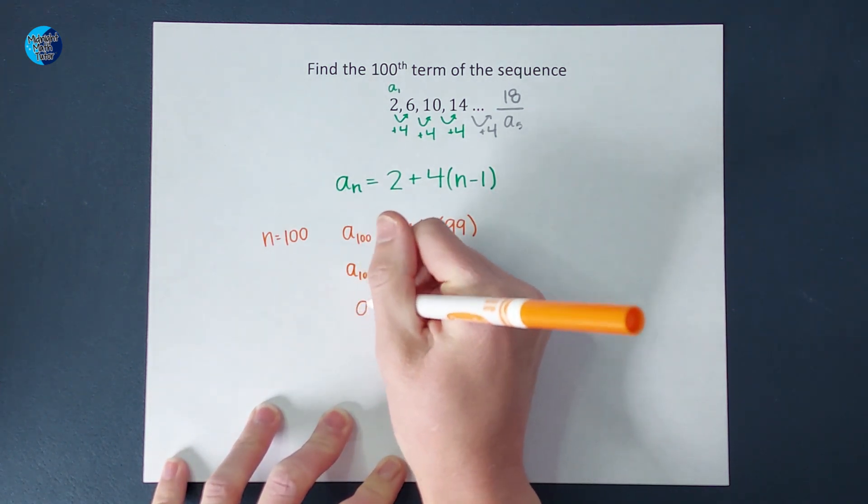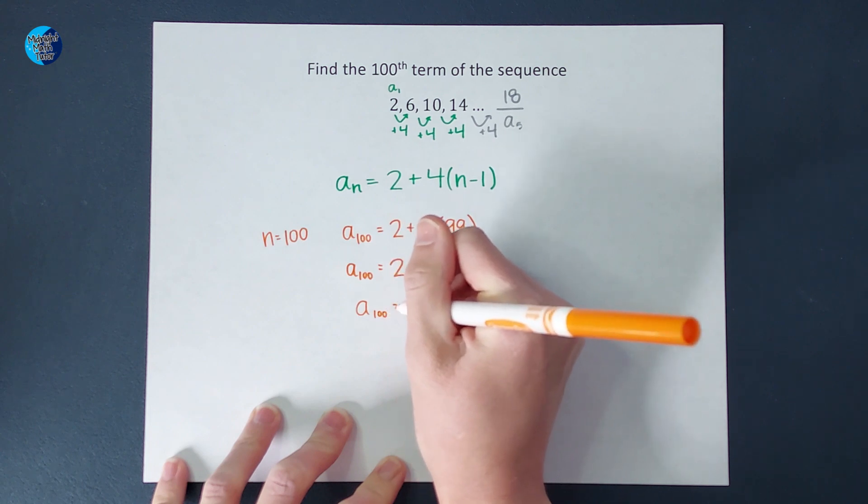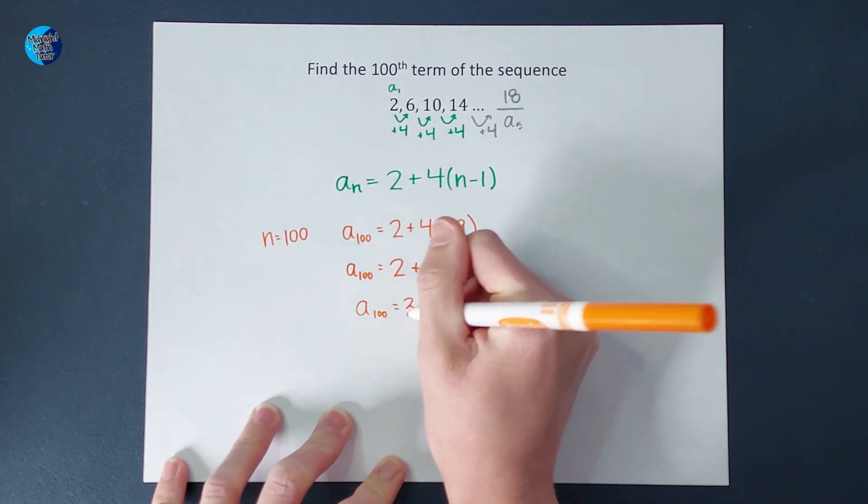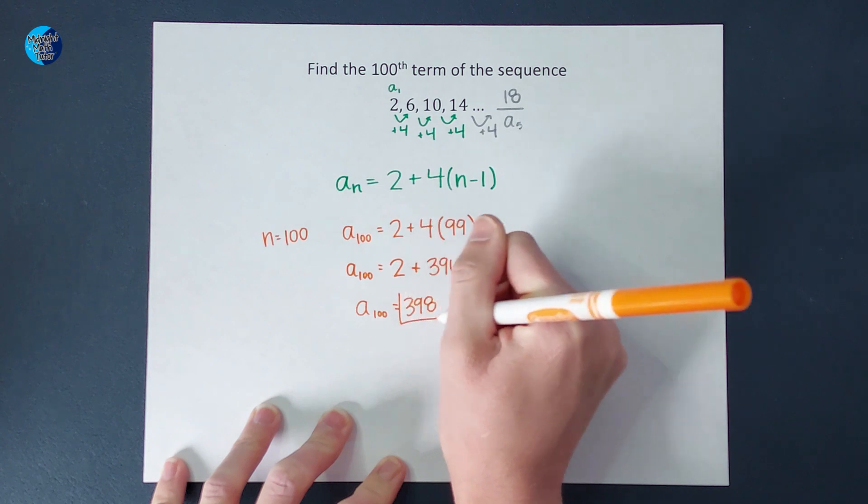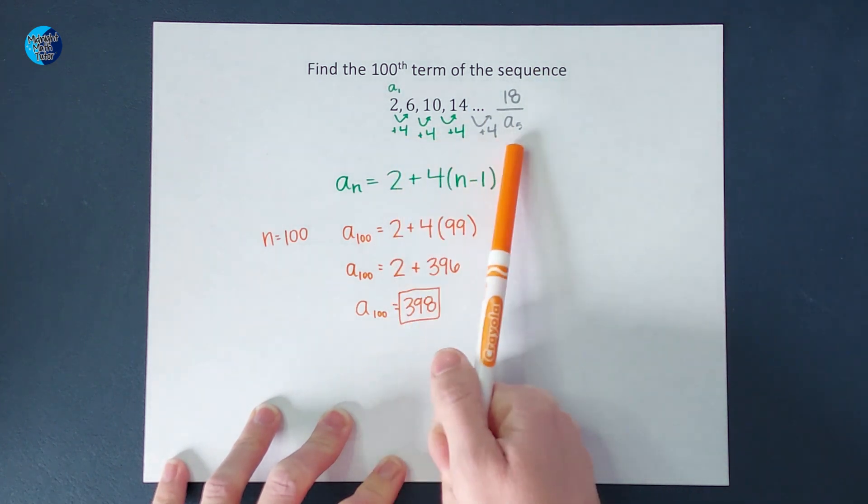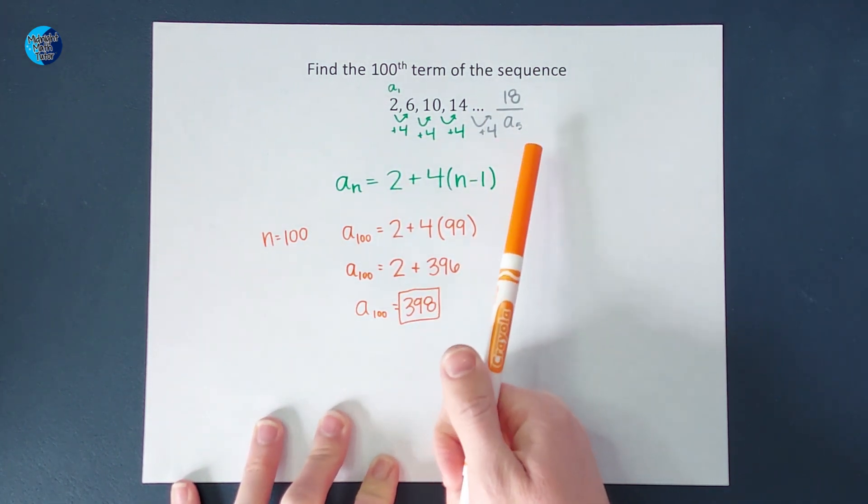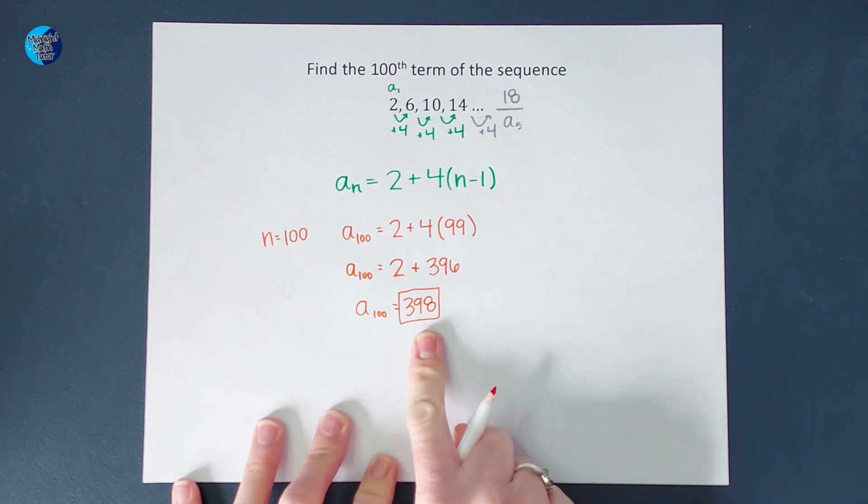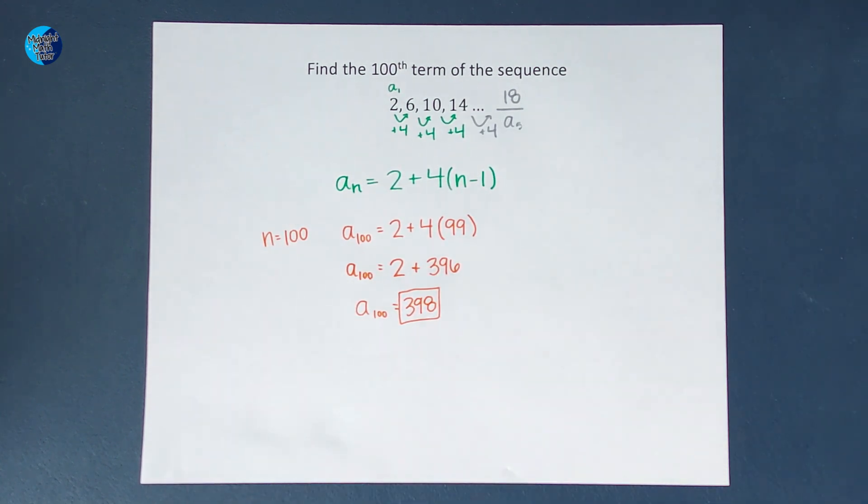a sub 100 is equal to 2 plus 396. So then, when I add those together, I end up with 398. So if I were to add 4 until I got to the hundredth term, it would be 398. All right, I hope this made sense. If you're finding yourself needing some more examples like this, I've got a whole playlist I will link for you. Thanks!